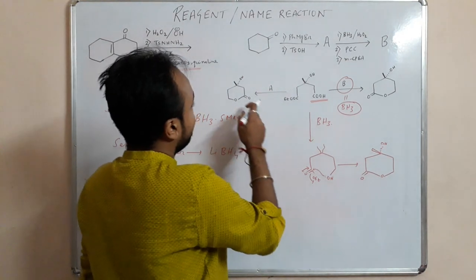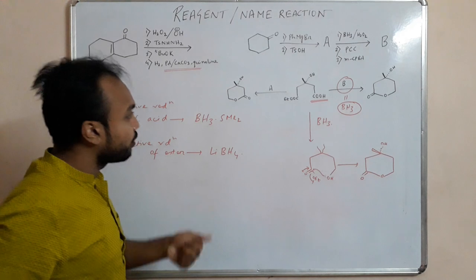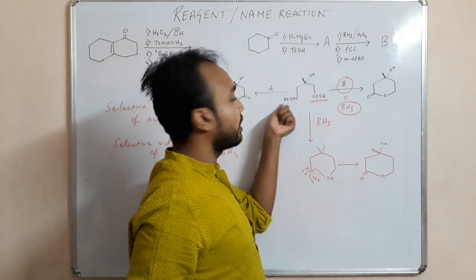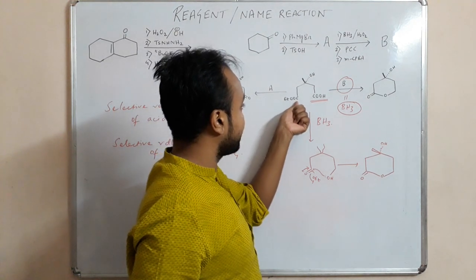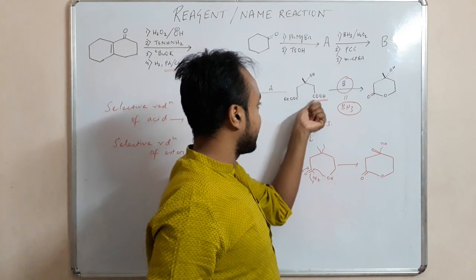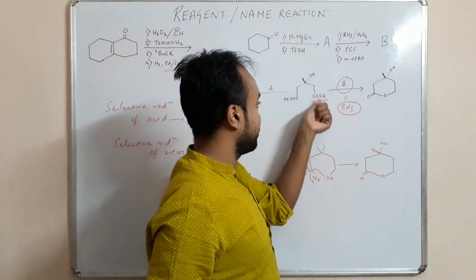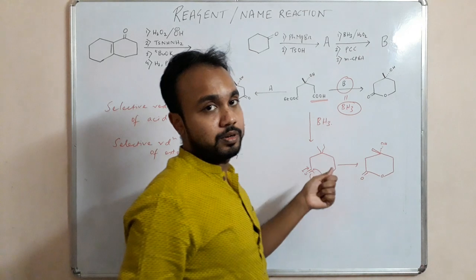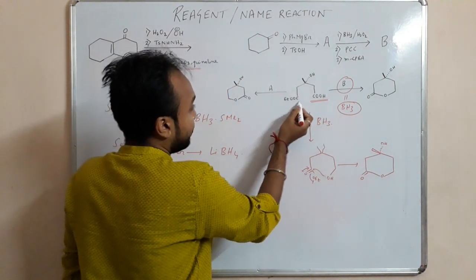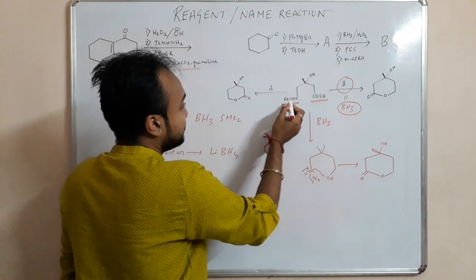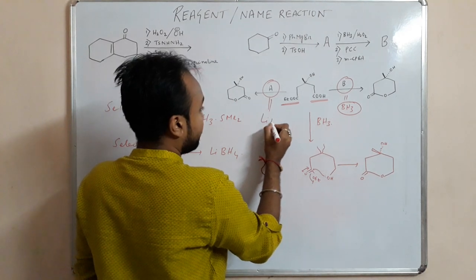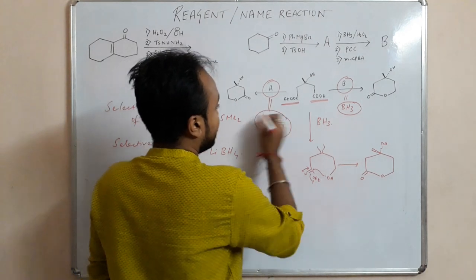And here you see, in this type, if we use lithium borohydride, then what will happen? This ester will get converted to alcohol. Then what happens? If this becomes alcohol, so if this alcohol forms, this attacks here and there will be a keto group over here. So since we are reducing this one selectively in this step, so A will be lithium borohydride.